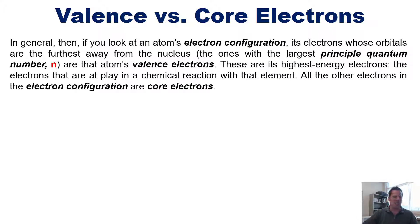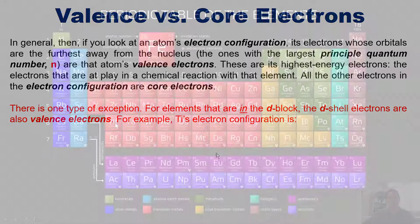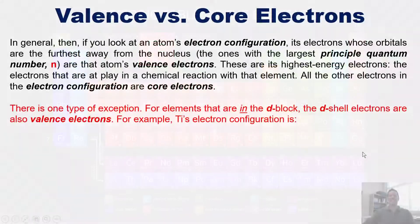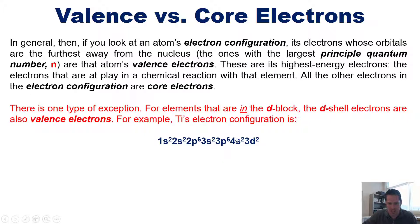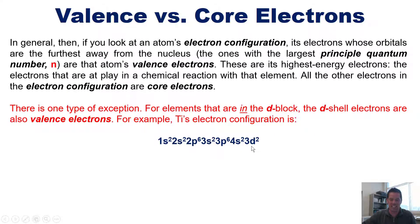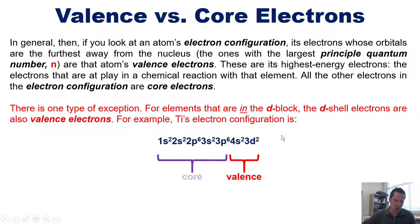There is one exception: for elements in the d block, the d shell electrons are also valence electrons. For example, titanium's electron configuration shows 4s2 3d2. Based on the bromine logic, you'd think only the 4s electrons are valence electrons, but because titanium is in the d block, the outermost d electrons also count as valence electrons. So all four of those electrons are valence electrons, while all others before them are core electrons.